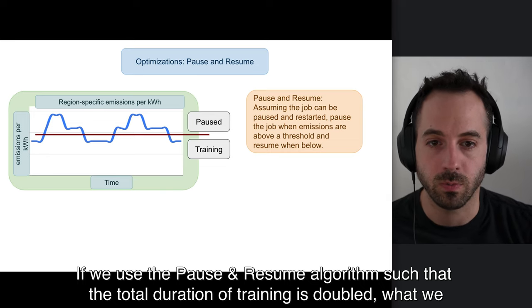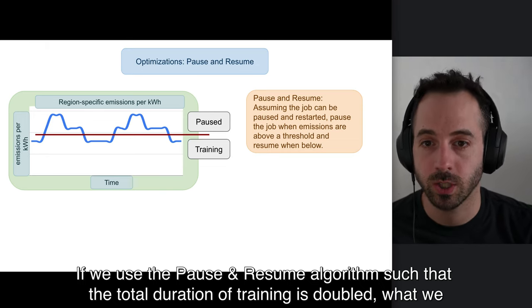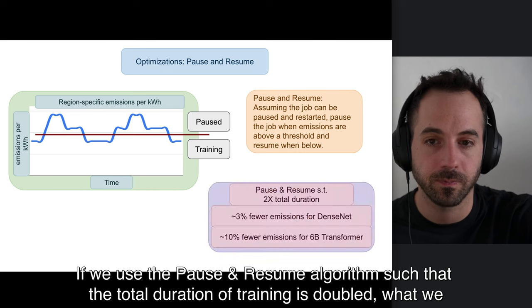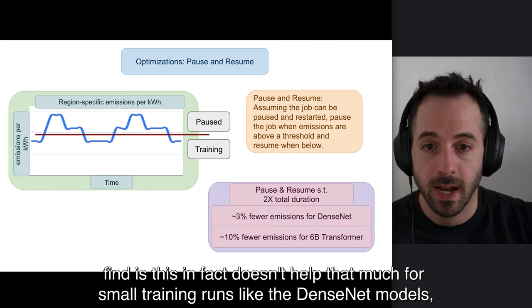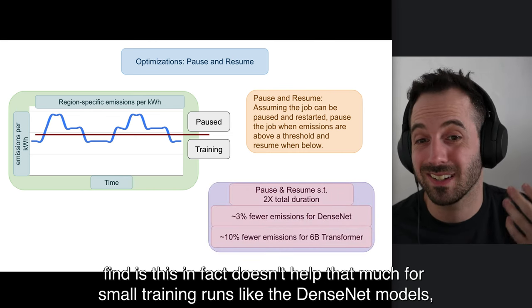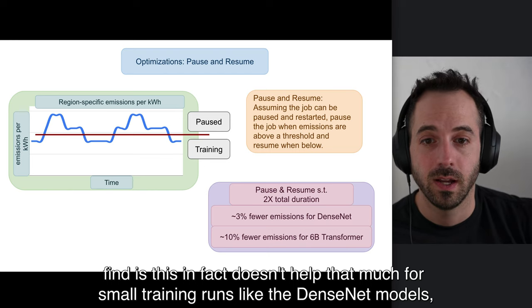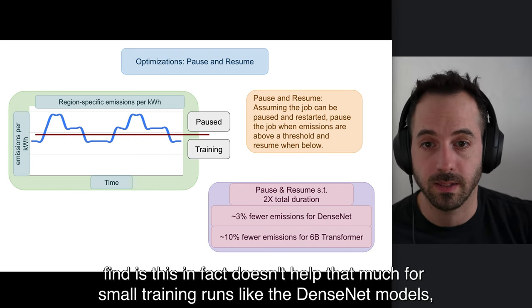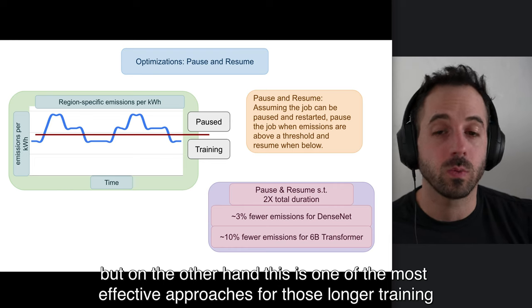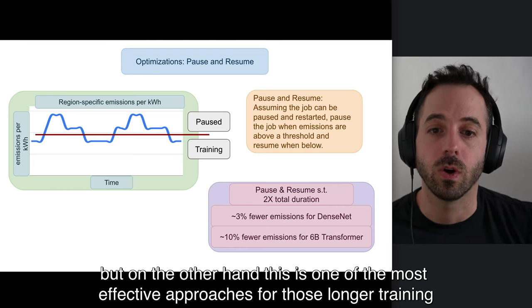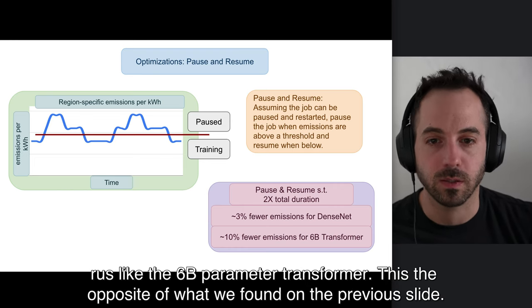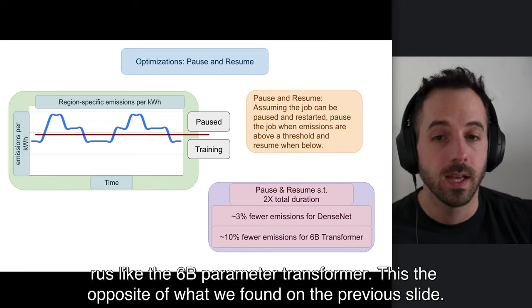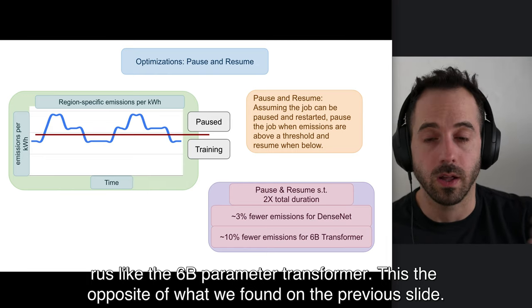If we use the pause and resume algorithm such that the total duration of training is doubled, what we find is that this doesn't help that much for smaller training runs like the DenseNet models. But on the other hand, this is one of the most effective approaches for those longer training runs, like the 6 billion parameter transformer. This is the opposite of what we found on the previous slide.